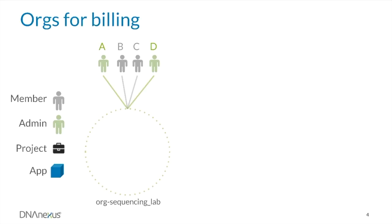In addition to simplifying sharing, orgs can be used to consolidate and simplify billing. Orgs can be associated with a billing account, which allows users to bill projects and apps to the org billing account. This means that members of the org can create org projects — projects that are billed to the org — and the org will be invoiced for the storage and compute charges associated with those projects.